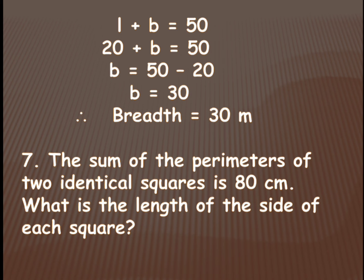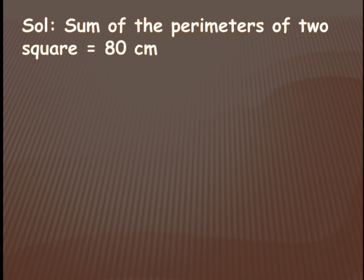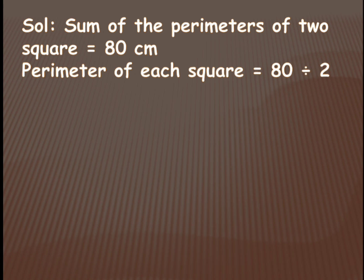Next problem: the sum of perimeters of two identical squares is 80 centimeters. What is the length of the side of each square? Since the squares are identical, their sides and perimeters are the same. Those two equal perimeters add up to 80 centimeters. We need to find the side of each square — if we find one, the other is the same because they are identical.